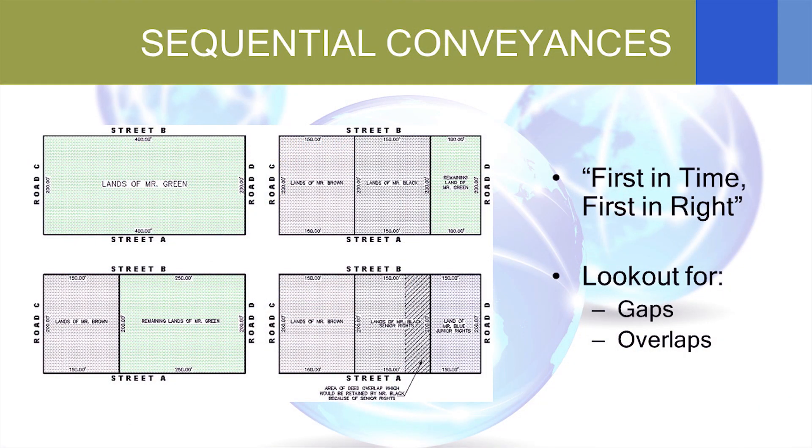First of all, sequential conveyances. This is a timeline of four scenarios. So it's one piece of land and that piece of land is going to be divided between Mr. Green, Mr. Brown, Mr. Black, and then others coming up. Here we begin with the land being owned by Mr. Green. Then we have Mr. Brown purchasing a West slice of property. Next, Mr. Black buys in and Mr. Black buys the centerpiece. And finally, we've got Mr. Blue, who buys the remaining chunk from Mr. Green.